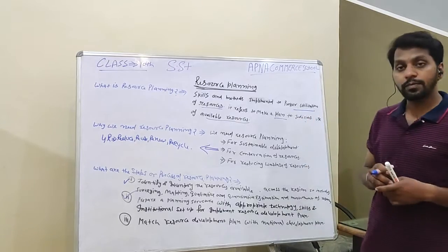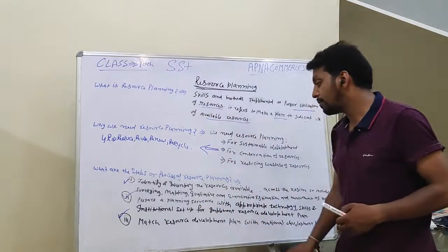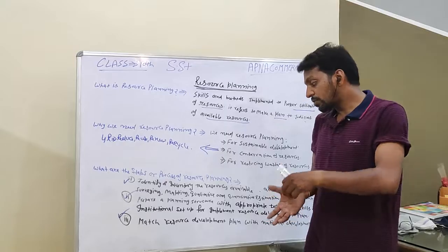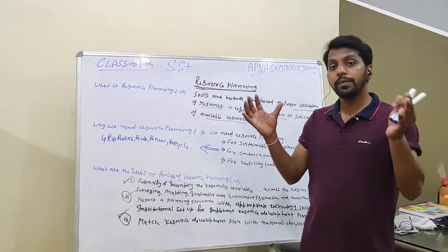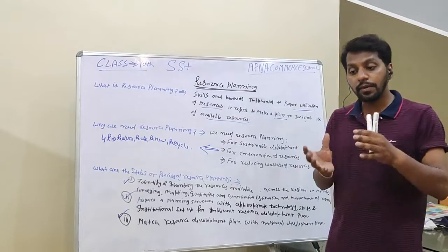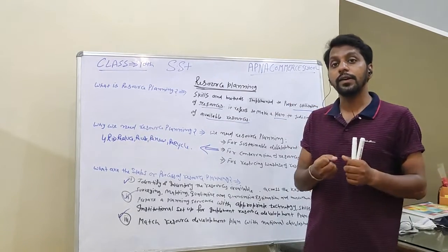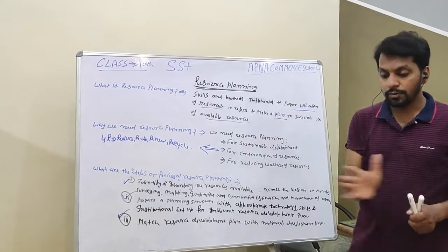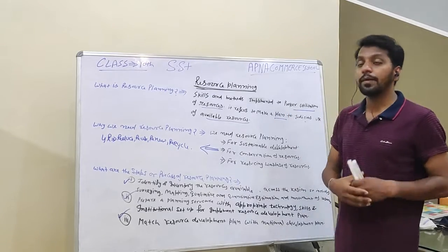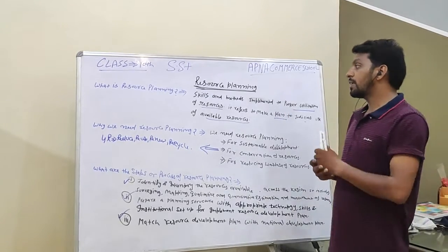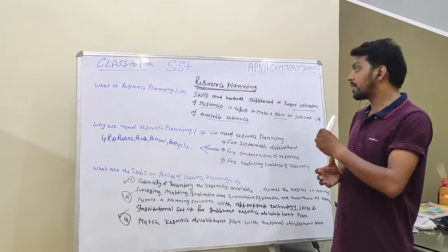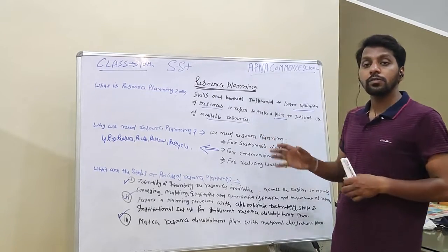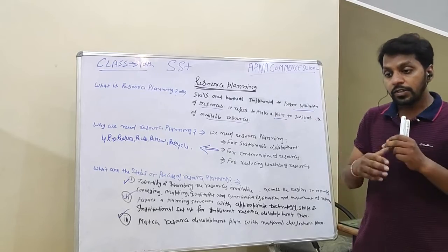The third step of resource planning is to support the resource development plan and match it with the national development plan. We need to create a resource development plan which will align with the national development plan, and implement skills and methods so that we can use our resources properly with proper utilization and optimization.